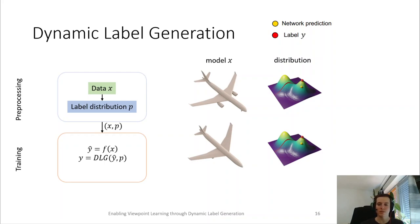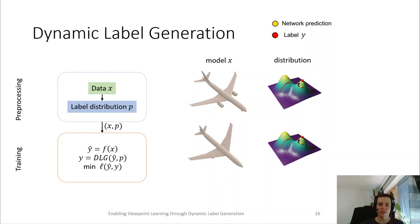Now, the network sees the same label for both similar inputs, and during the optimization step, it will receive similar gradient directions, and thus, the two models will reinforce the training process, instead of producing contradicting gradients as in the previous case. Note that in this setting, we delegate the decision on whether two input models are similar or not to the network by making it dependent on the network prediction.